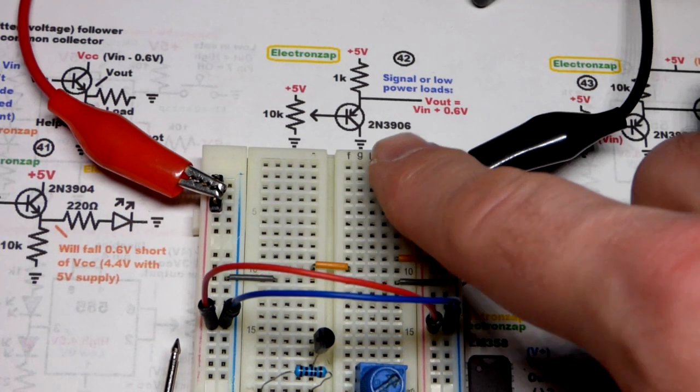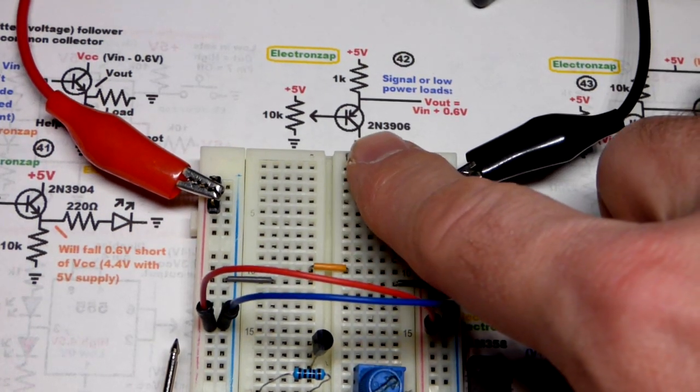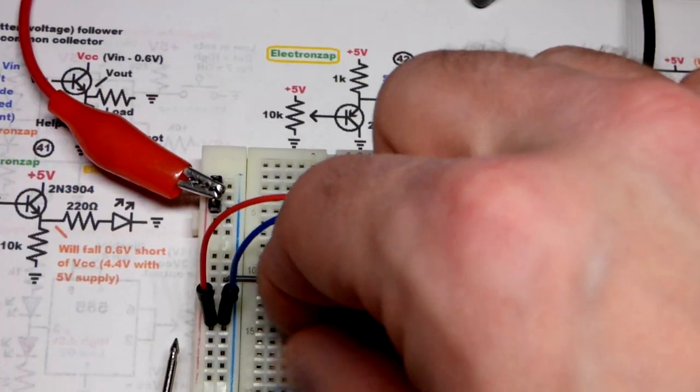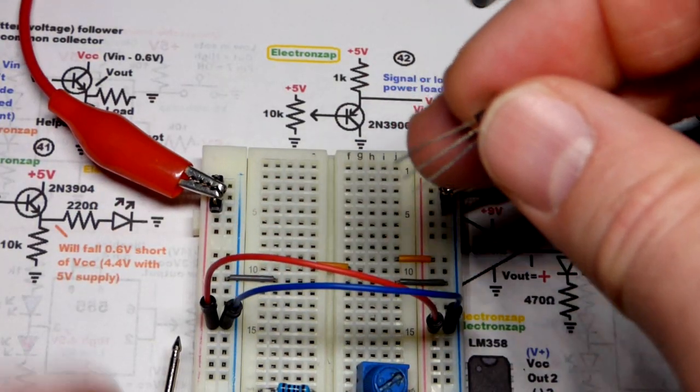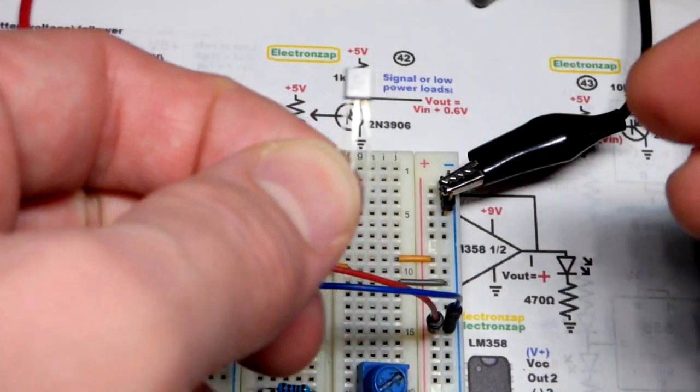So now we're going to do a step-by-step build of the PNP bipolar junction transistor. I'm using the 2N3906 right here as an emitter follower.